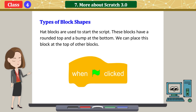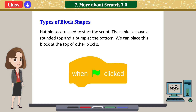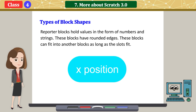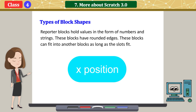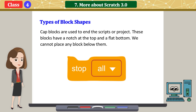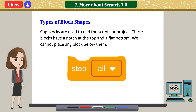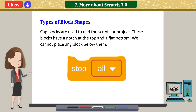Hat blocks are used to start the script. These blocks have a rounded top and a bump at the bottom. We can place this block at the top of other blocks. Reporter blocks hold values in the form of numbers and strings. These blocks have rounded edges. These blocks can fit into another block as long as the slots fit. Cap blocks are used to end the scripts or project. These blocks have a notch at the top and a flat bottom. We cannot place any block below them.